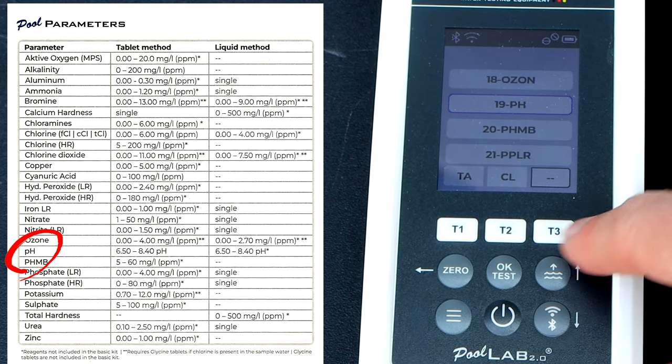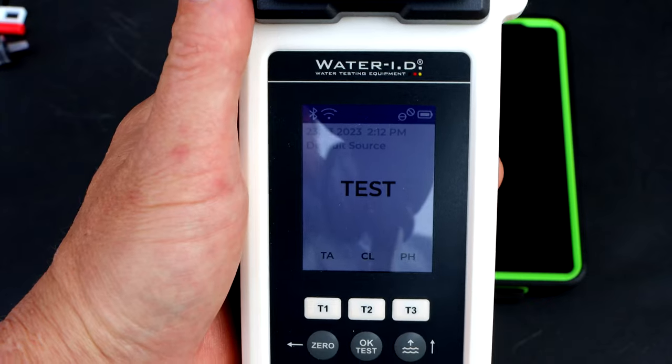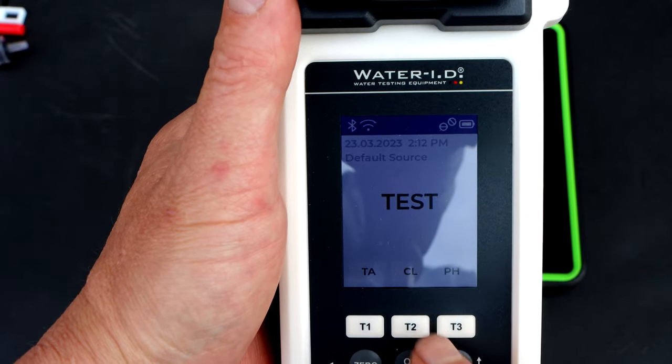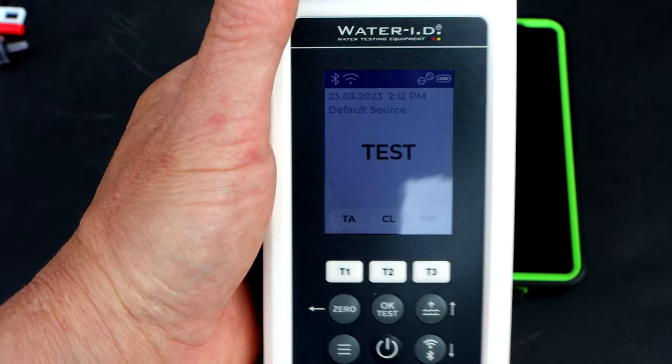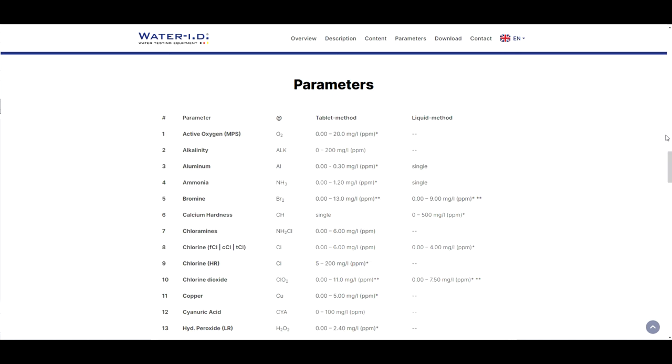You can see there's a lot of test factors in here. I have total alkalinity, chlorine, and pH indicated at the bottom. There are some test parameters that I think you definitely would want to order the tablets for. You have high chlorine which will test chlorine up to 200 parts per million.